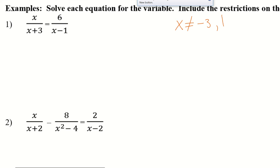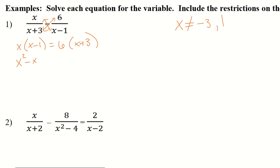We start off and we're going to cross multiply. Now I have x times x minus 1 is equal to 6 times x plus 3, which gives me x squared minus x equals 6x plus 18. I'm going to move everything over to one side so that it's equal to 0. Subtracting 6x and 18 gives me x squared minus 7x minus 18 equals 0.